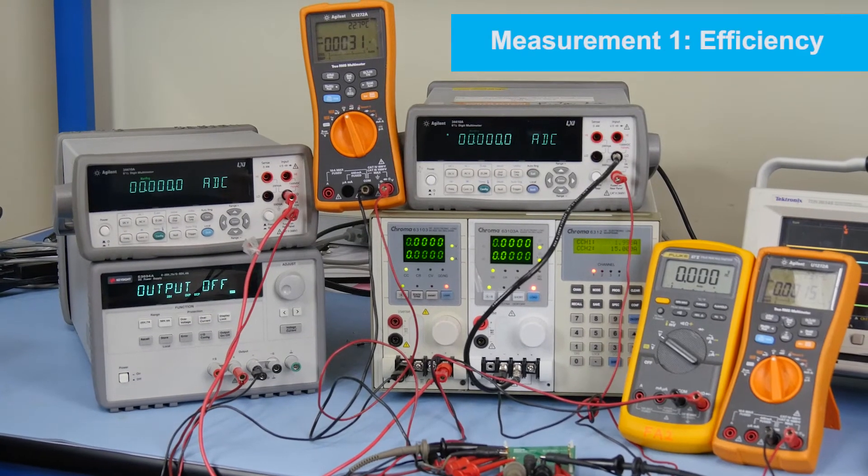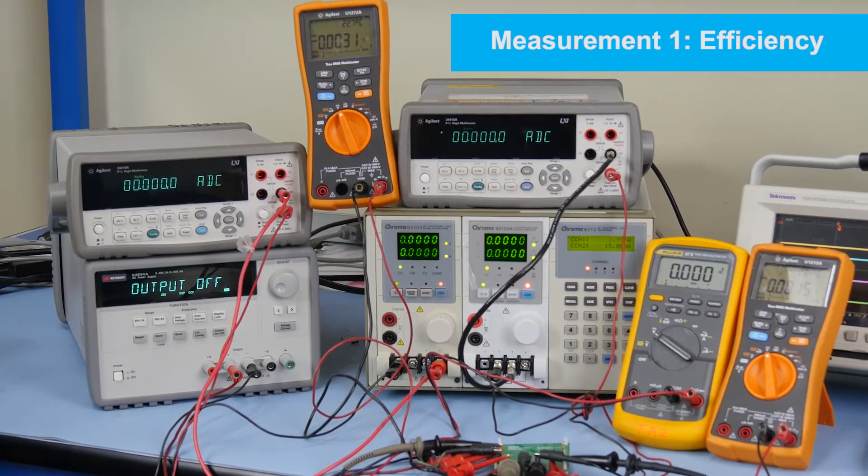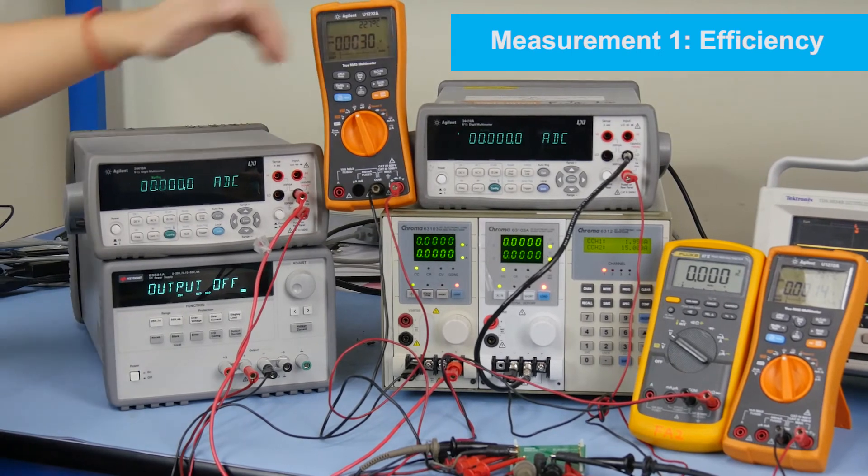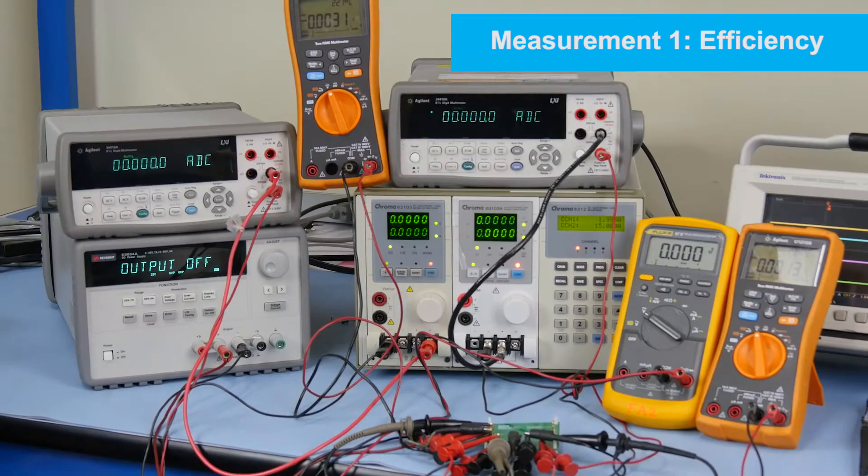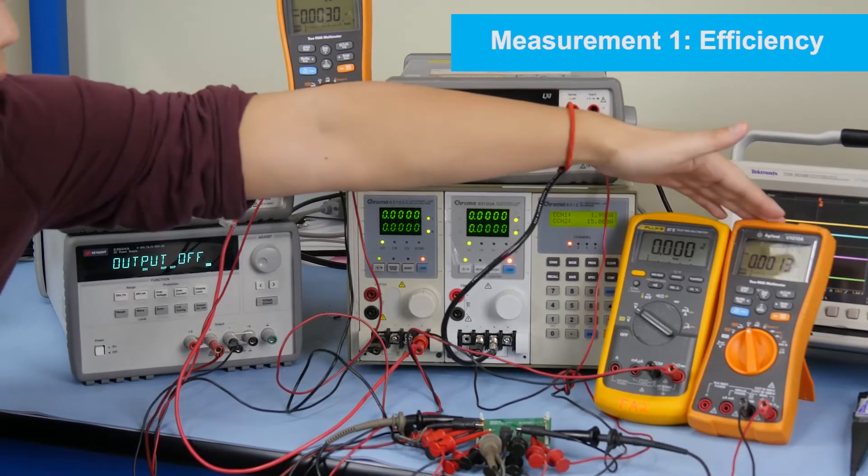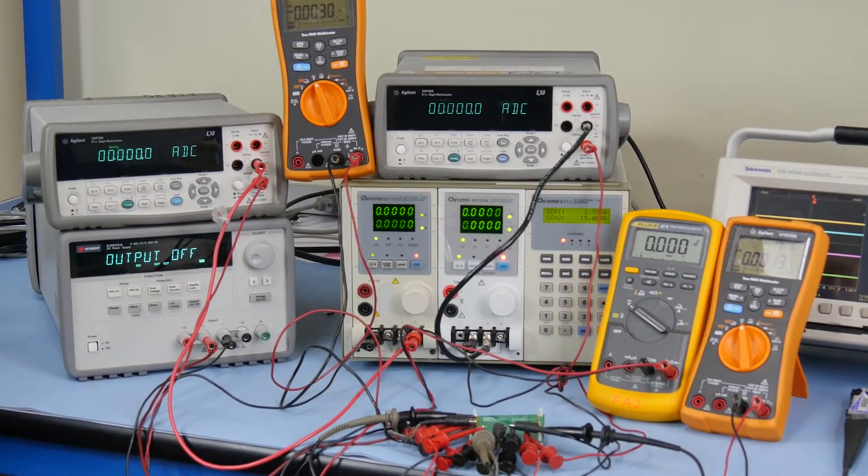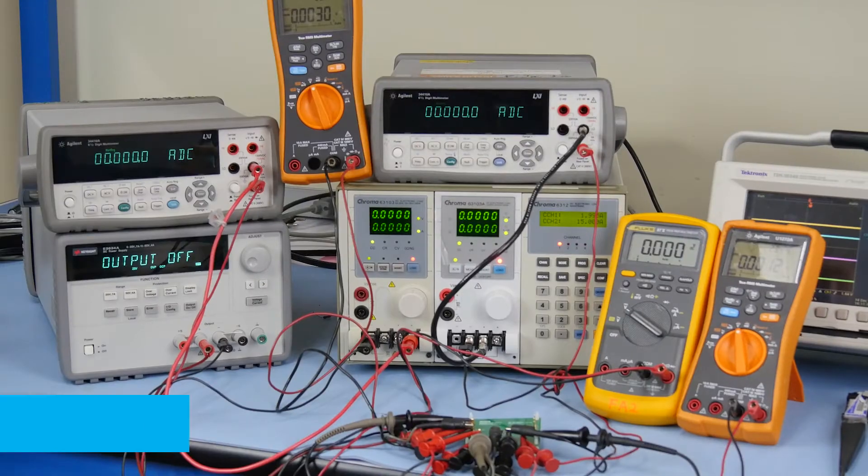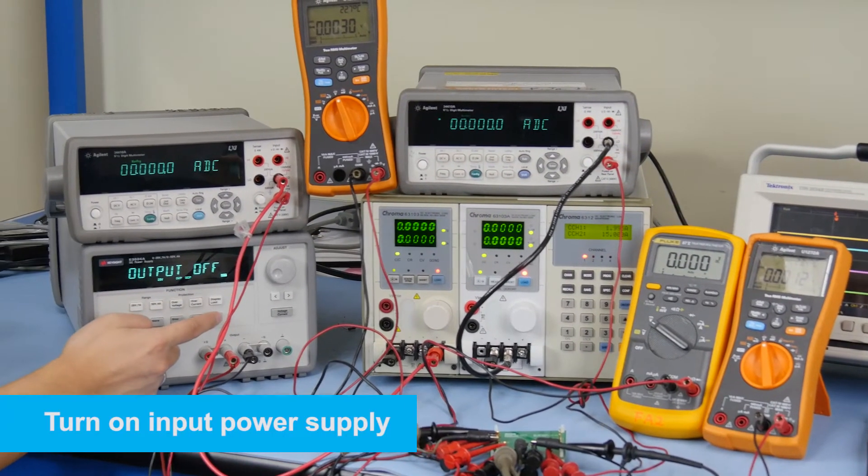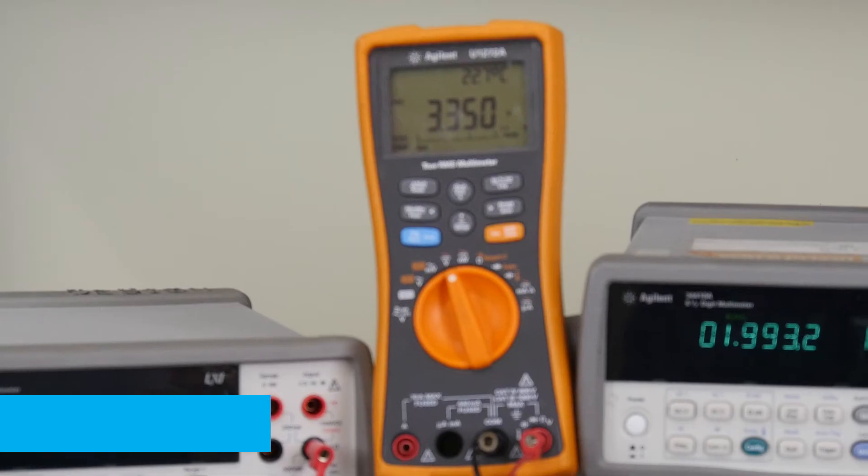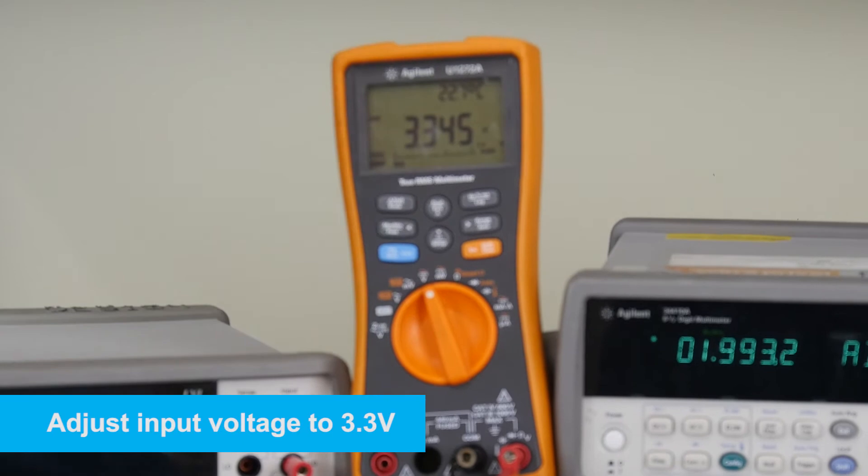Our first measurement will be efficiency. With power off, we connect the current meters to the input and output side to measure input and output currents. We then hook up the handheld multimeters to the input and output ceramic capacitors to measure input and output voltages. After that, turn on the input power supply. With output power off, adjust the input voltage to be 3.3V and then turn on the output power.